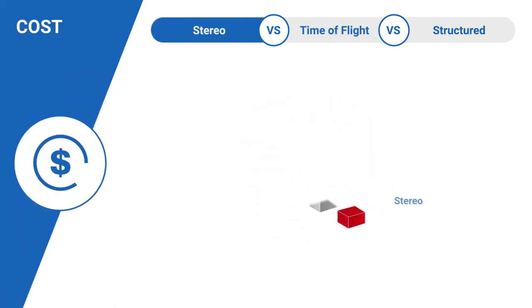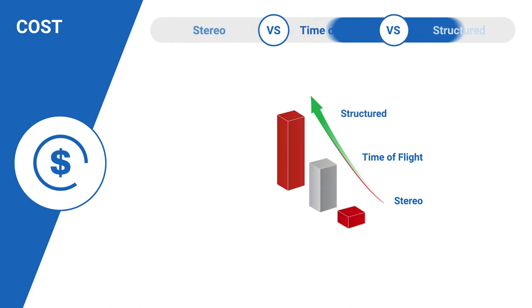When it comes to cost, stereo cameras tend to be cheaper as they're built using CMOS sensors. Among the three, Structured Light is the most expensive. This is because, if your aim is to achieve high levels of accuracy in a Structured Light System, the cost of the camera, the pattern projector, and the host device also tends to be higher. In general, time-of-flight cameras are cheaper than Structured Light Systems, making them a viable option for a lot of depth-based embedded vision applications.